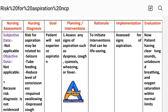The nursing diagnosis could also be risk for aspiration related to seizure, reduced level of consciousness, or impaired swallowing — any factor according to your patient's condition. You have to focus the nursing diagnosis on whatever the patient's related condition is, such as risk for aspiration related to impaired swallowing.